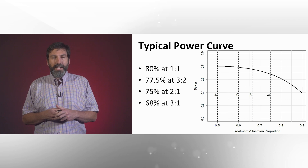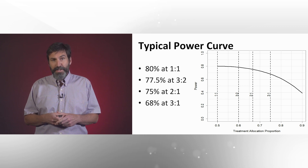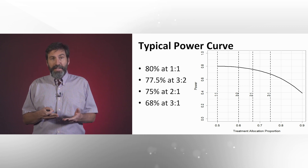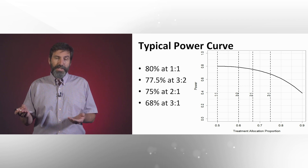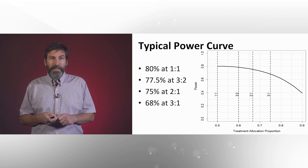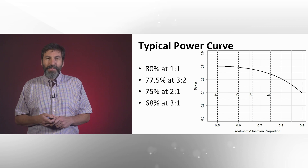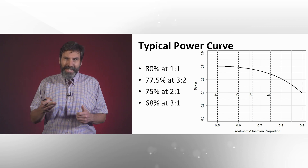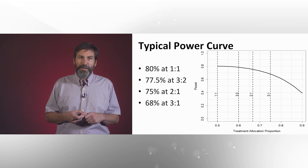What happens to our power? It drops off a little bit. In this particular example, it drops from 80% down to 77.5%. And if you keep going — if you make that randomization ratio a little more extreme and go out to two-to-one where 67% of patients are randomized to the treatment arm — power drops to 75%. Keep going out to three-to-one, it drops to 68%, and it keeps getting worse as we move the randomization ratio out.